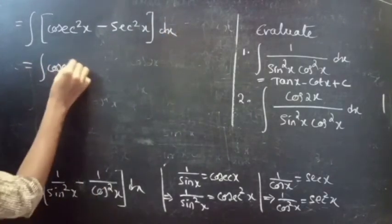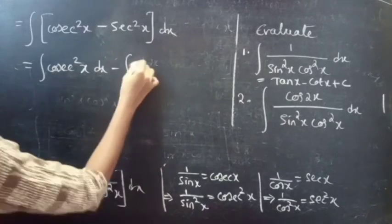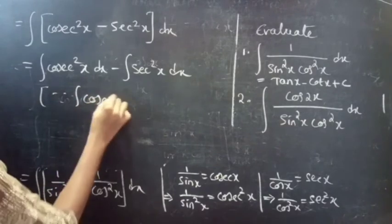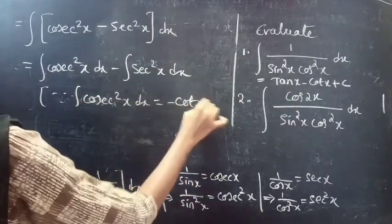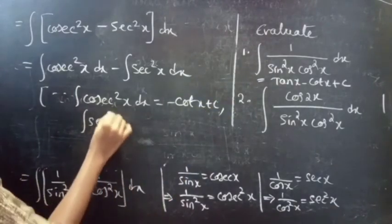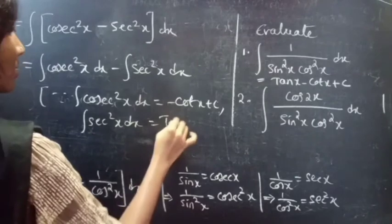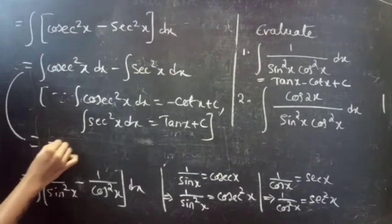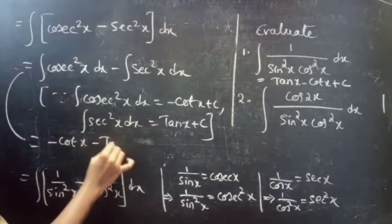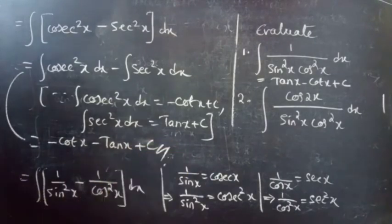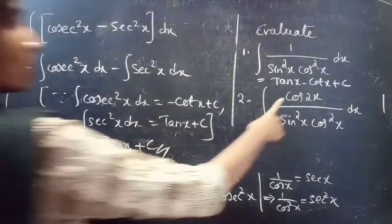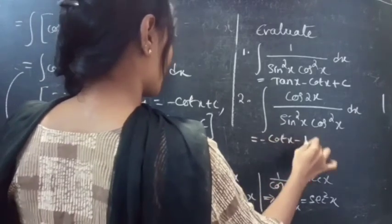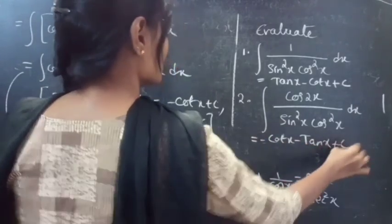This equals the integral of csc²x dx minus the integral of sec²x dx. Since the integral of csc²x dx = -cot x + c and the integral of sec²x dx = tan x + c, this becomes -cot x - tan x + c. Therefore, the integral of cos 2x/(sin²x · cos²x) dx equals -cot x - tan x + c.